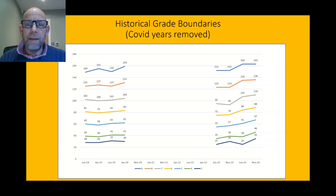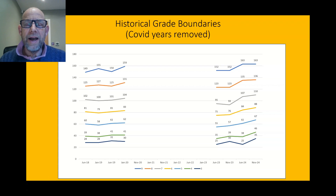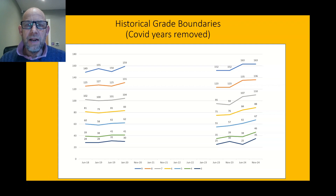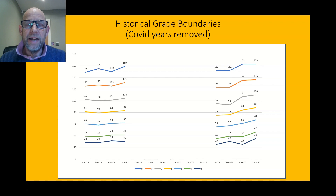Then 88 for a grade 6, 67 for a grade 5, 46 for a grade 4, and 35 for a grade 3. Do not let the historical grade boundaries lull you into a false sense of security — I suspect the marks you'll need will be very similar to those on the right-hand side of this table: the marks required in November 2024.